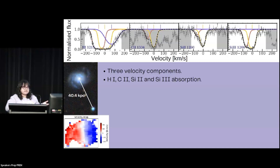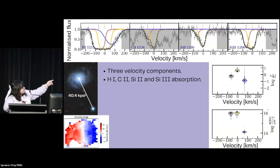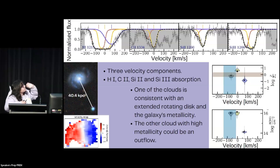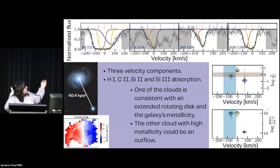About the properties of this gas: at the top we have metallicity versus velocity, and at the bottom we have column density versus velocity for each of the velocity components. The blue rectangle represents the velocity range of the face-on galaxy, and the brown rectangle represents its metallicity range. We can see that one of the clouds is consistent with an extended rotating disk and also with the galaxy's metallicity. There's also another cloud with higher metallicity that could belong to an outflow — which has been a theme of this session.